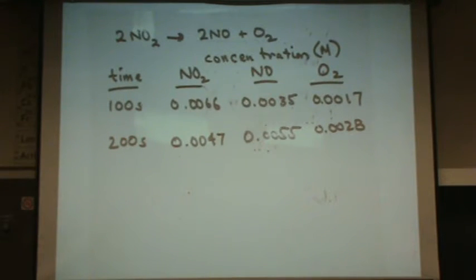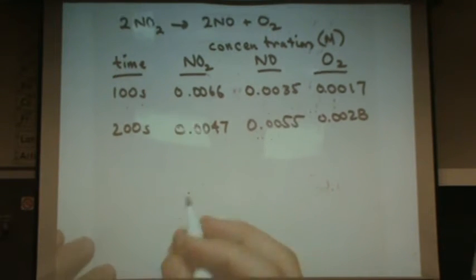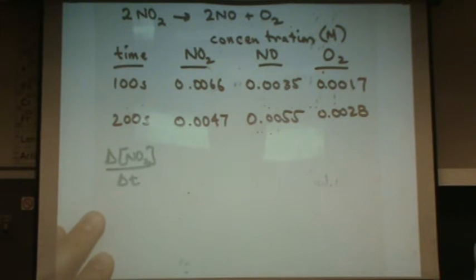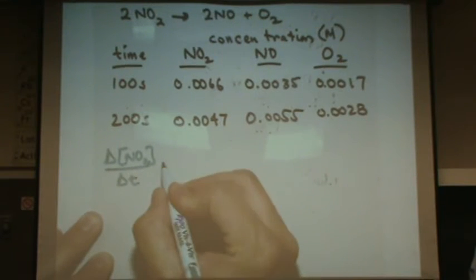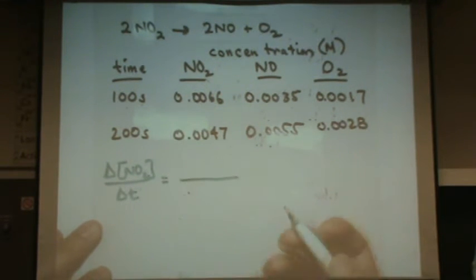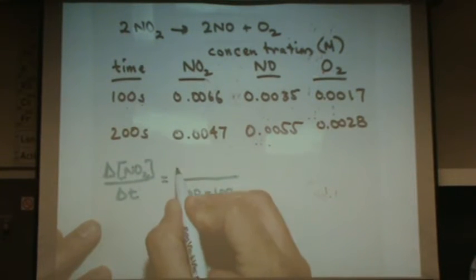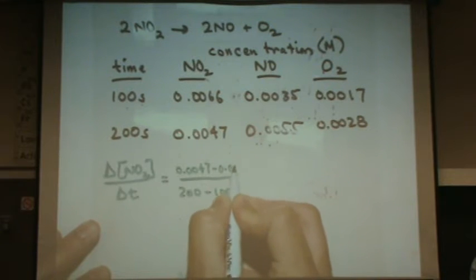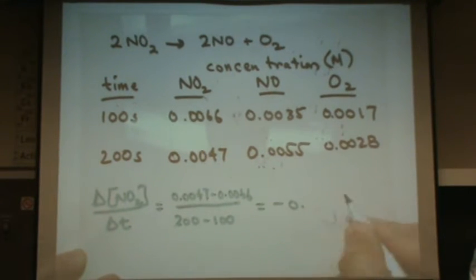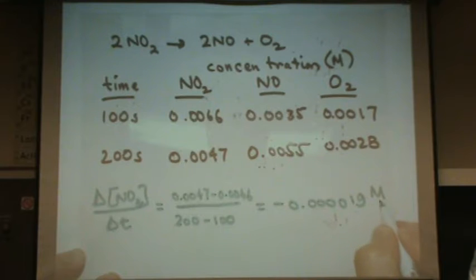And I'll get more technical about some of our definitions. Let's do the change of NO2 over the change in time. Later we'll put in the coefficients. But for now let's just write it like this. This equals, so I'm going to use the first two columns here. It doesn't matter which number I take first. So I'm just going to do 200 minus 100 seconds on the bottom. On the top I've got to match the numbers. So 0.0047 minus 0.0066. That turns out to be negative 0.000019 molarity per second.